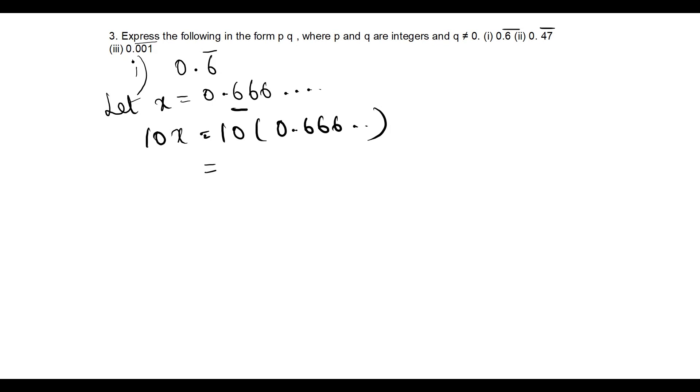10 into x will be 10 into 0.666, so this is 6.666. Now we have to convert this into a numerical value plus x form. If you subtract 0.666 from this, the remainder is 6. So 6 plus 0.666, which can be represented as x.